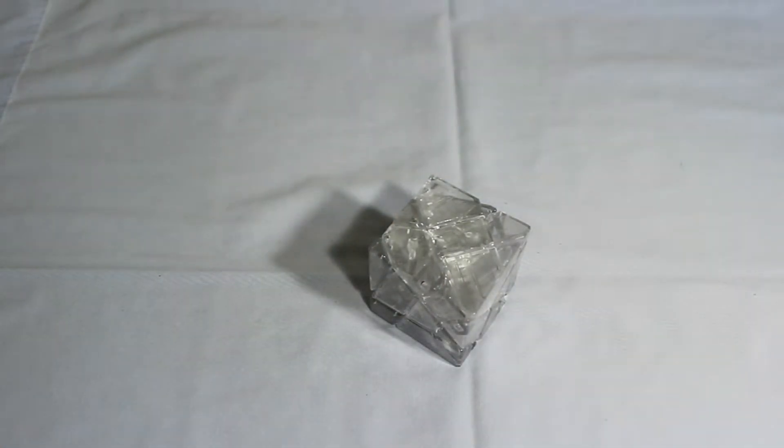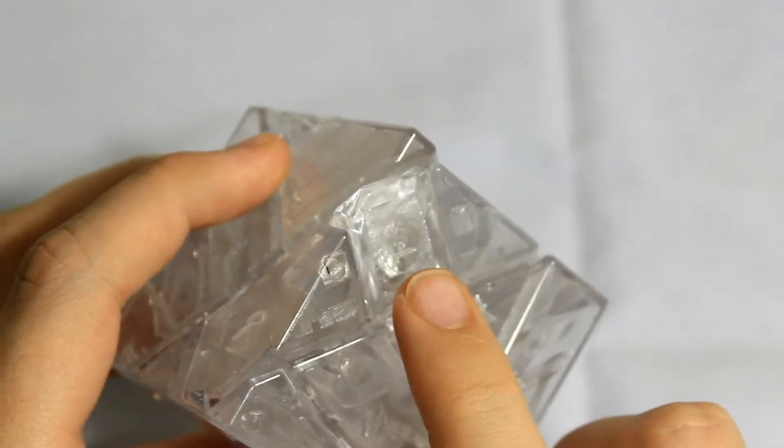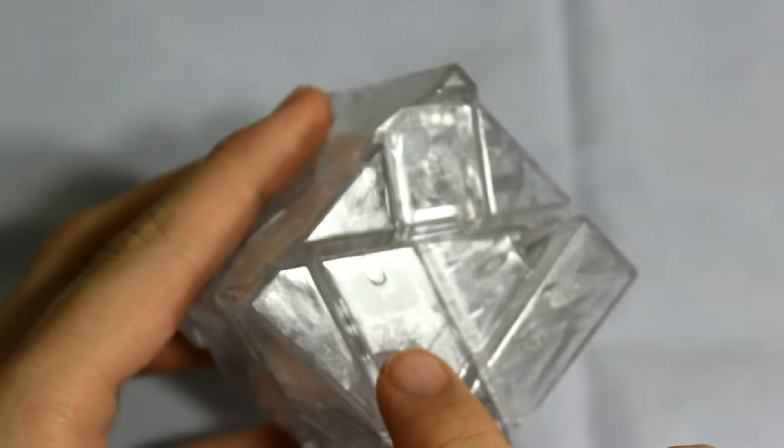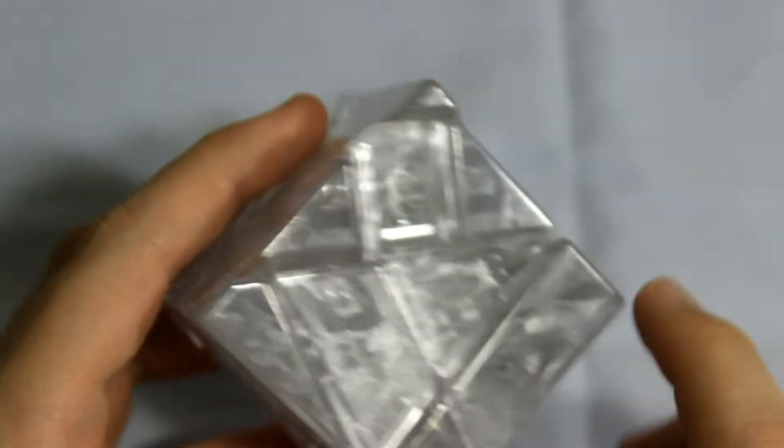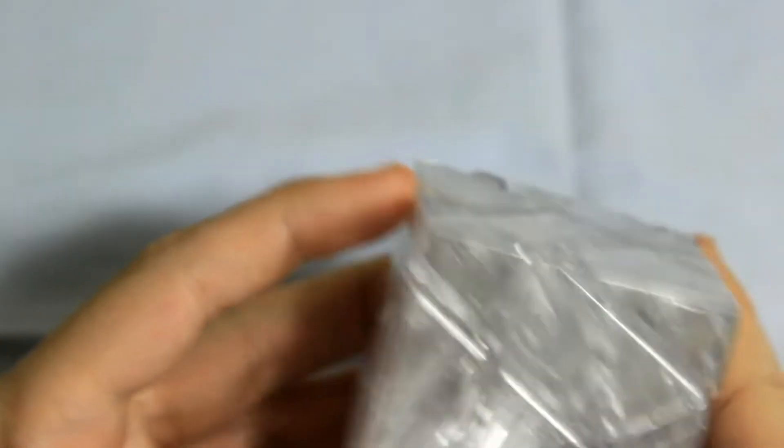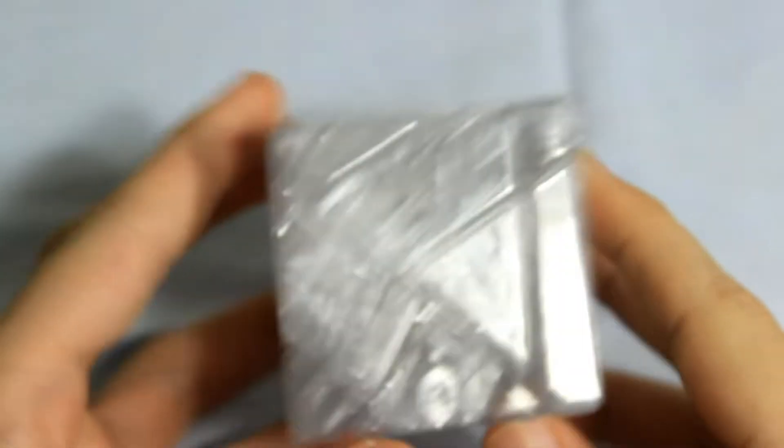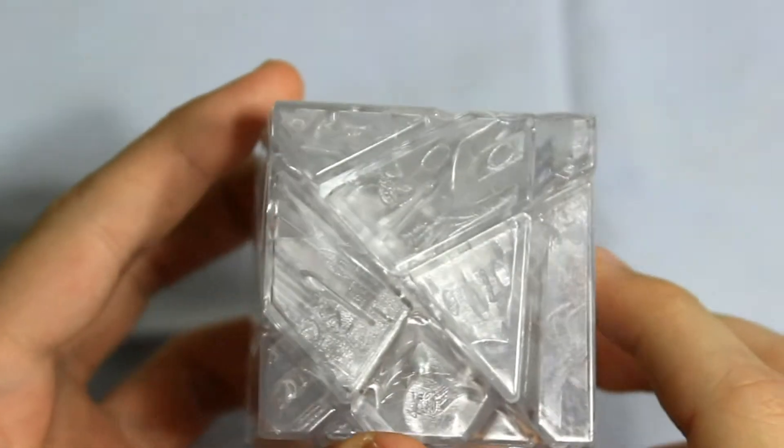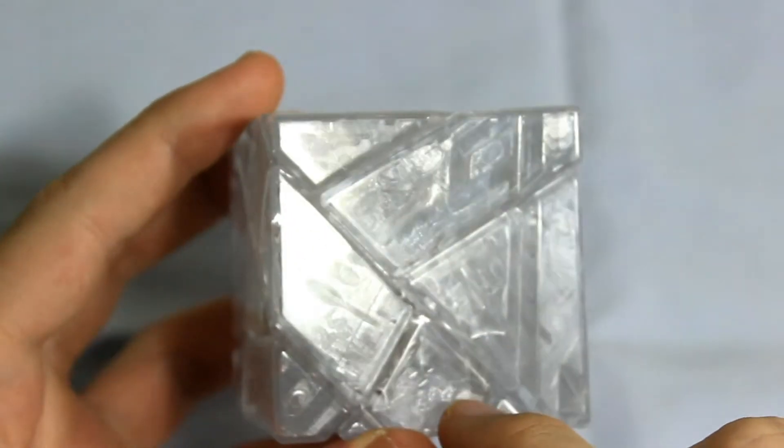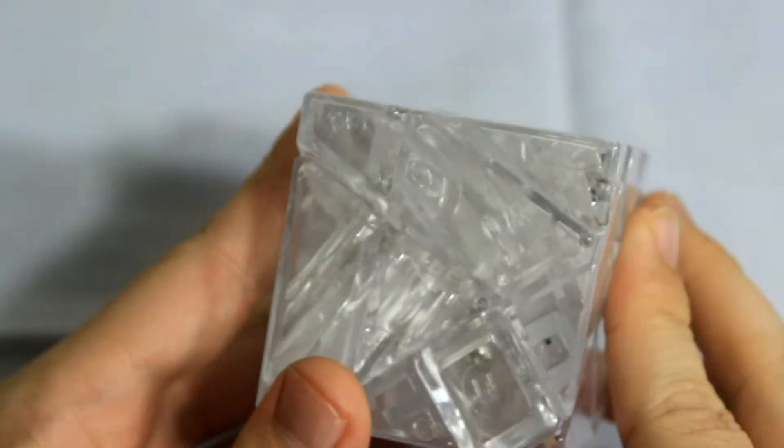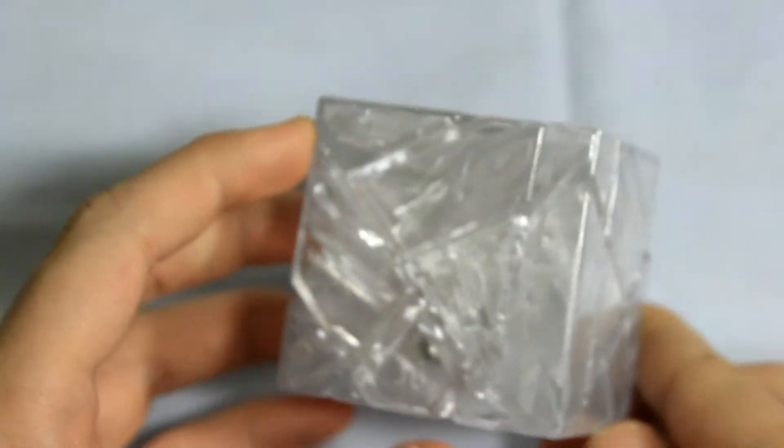This is actually a prototype for the Crystal Ghost Cube from Mefferts. There's a Mefferts logo right there, and then there are some numbers and imperfections on the pieces. The mass-produced version, the final version, will be perfectly clear. It won't have any of these lines or things that make it look not quite as transparent.